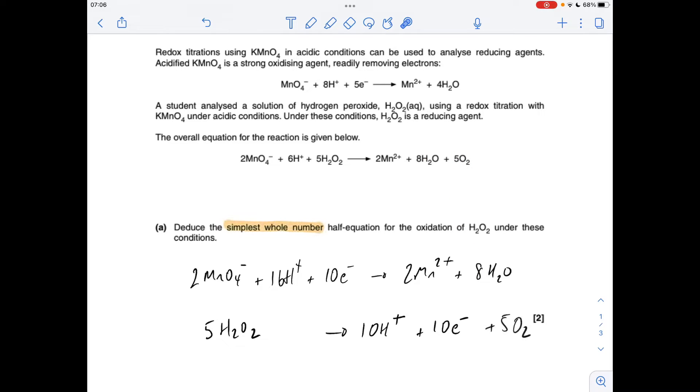5O2 is missing. Question 1 is the simplest whole number half equation, so you can see we can divide everything through by 5. So that's our answer.